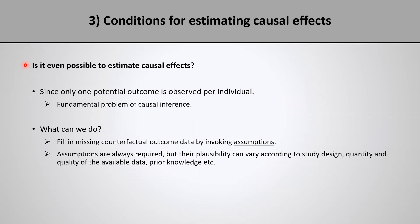At this point in the course, you might be asking yourselves: is it even possible to estimate causal effects? After all, in the last video, we saw the fundamental problem of causal inference, which essentially means we do not have enough information from data alone to estimate causal effects, because we only observe one of the potential outcomes per individual.